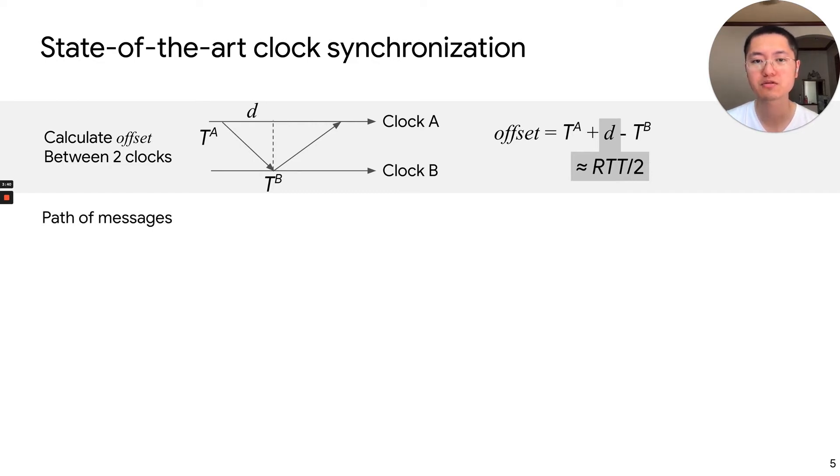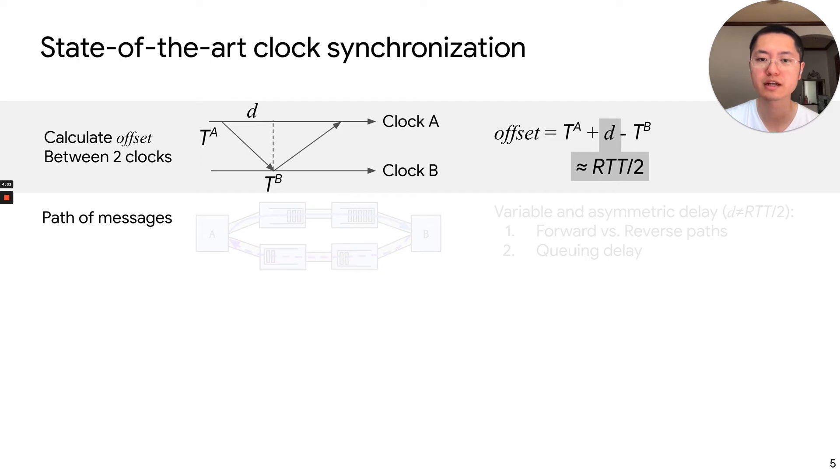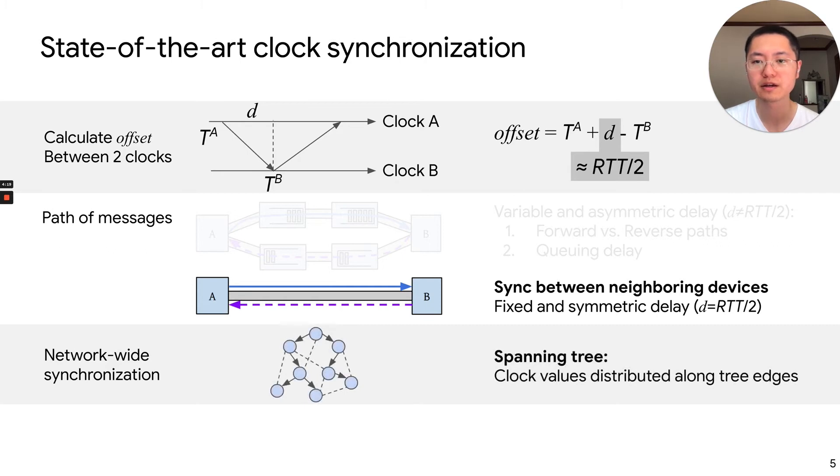Then the next question is how to send messages. Many solutions send a message over multiple hops. But this has a problem because the delay can be variable and asymmetric. This is because the forward path and the reverse path can be different, and there is queuing that can cause variable delays. So the best practice is to send messages only between neighboring devices. And this brings a fixed and symmetric delay. This is between a pair of clocks. Then given a network of clocks, the common practice is to structure them into a spanning tree, and the root will distribute a clock value along the edges of the tree.